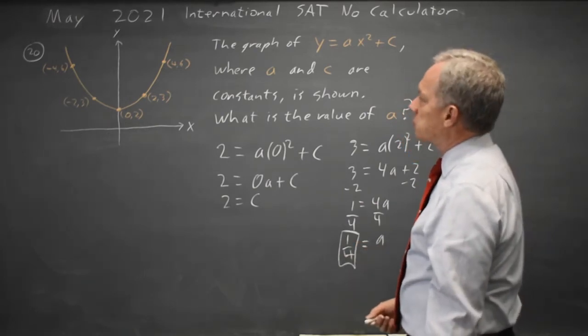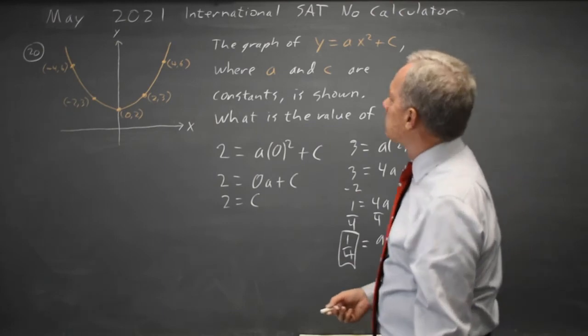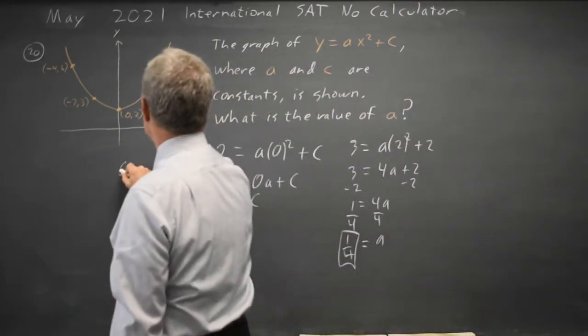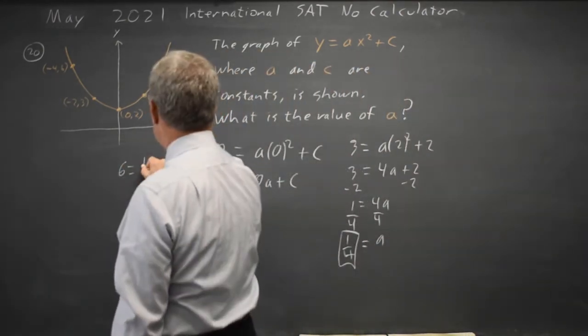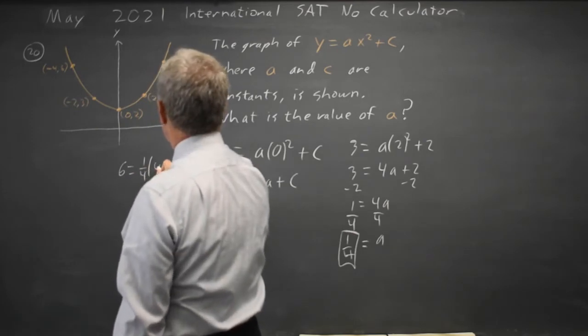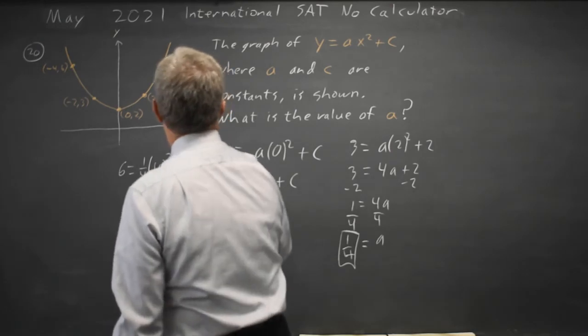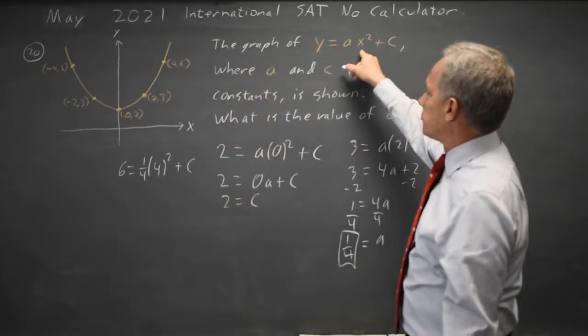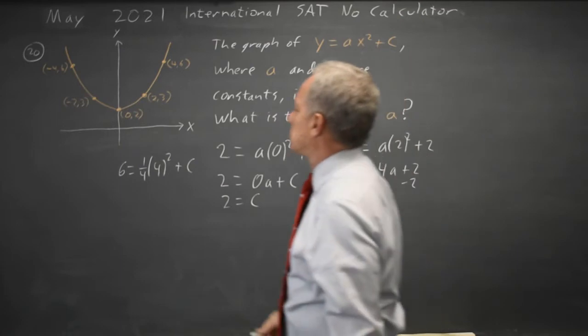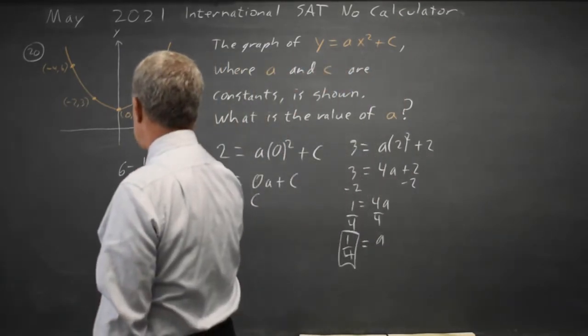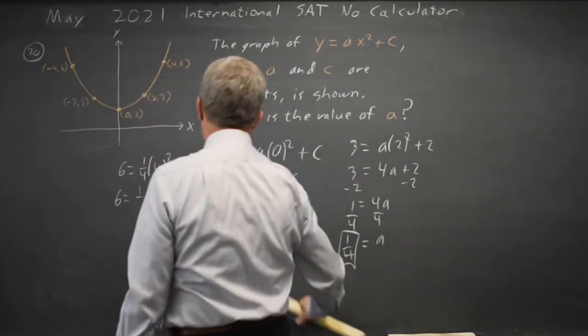Let's see if that works with one more point. How about y equals 6 equals a is 1 fourth, x equals 4 squared plus c is 2. So x equals 4 gives me 4 squared, y equals 6, 6 equals 1, and c is 2.